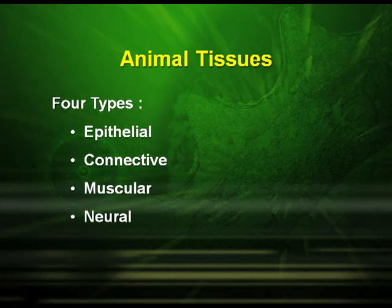In animals there are mainly four types of tissues — the epithelial tissues, the connective tissues, the muscular tissues, and the neural tissues.